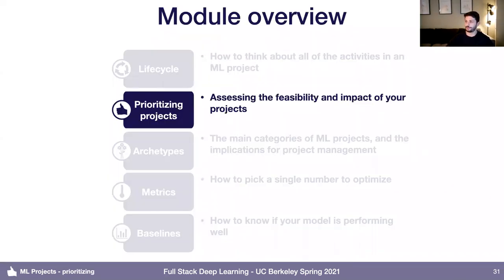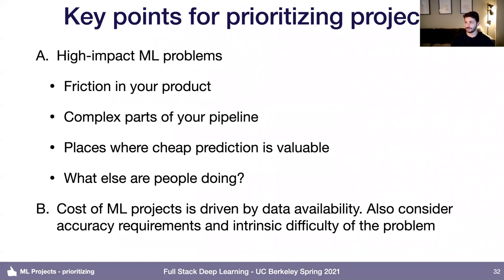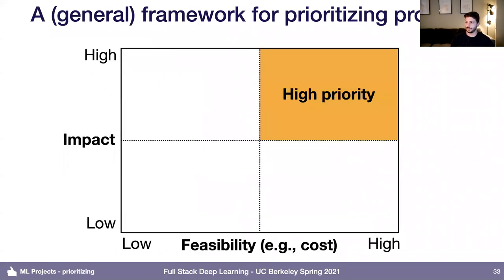Next, we'll talk about how to prioritize machine learning projects. This boils down to finding problems that are potentially high impact and assessing what the cost of those projects might be. A general framework for prioritization: you want to look for things that are high impact and relatively feasible. You might plot your projects on a two-by-two matrix, and the ones in the upper right corner — high impact and high feasibility — are the ones to go and try.